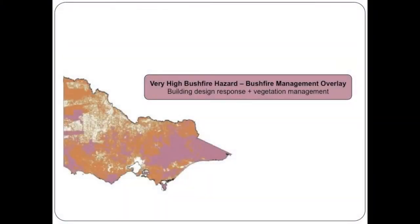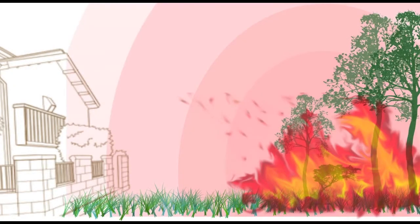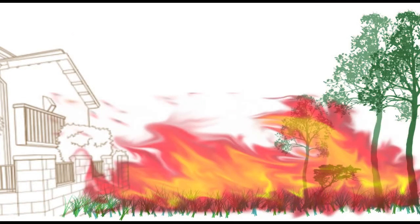Properties in the very high bushfire threat category are covered by the bushfire management overlay, or BMO, and require protection from ember attack, radiant heat, and direct flame contact.